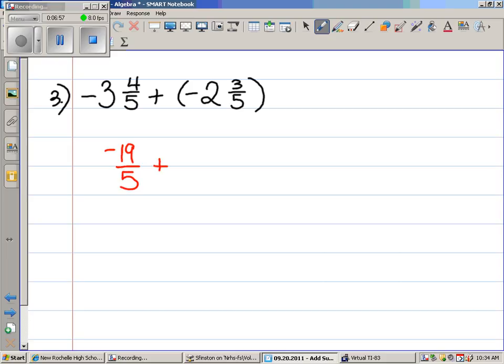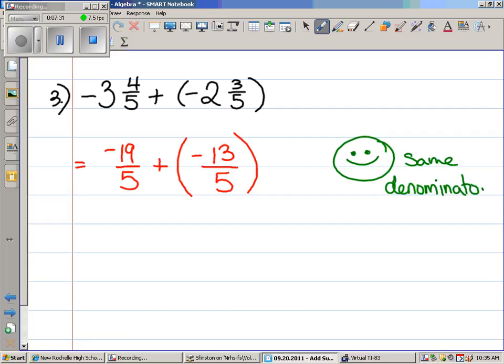Let's do it for the next part. What do you think that one's going to be? Negative 13 fifths. Now, is this a happy place? Happy problem? Yeah! This is a happy place. Happy problem. Why is it happy? Same denominator.